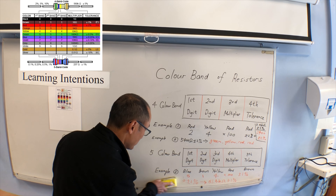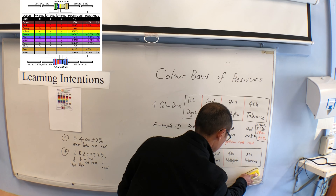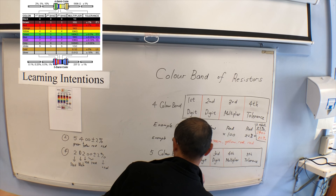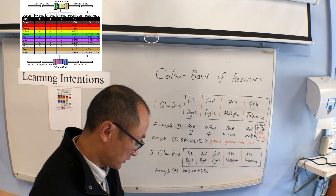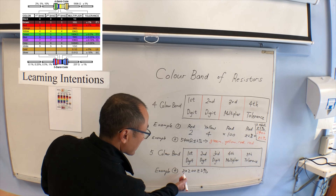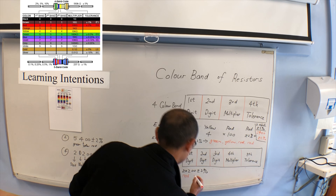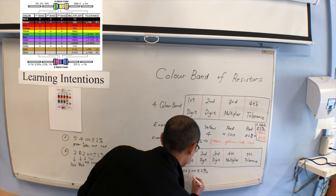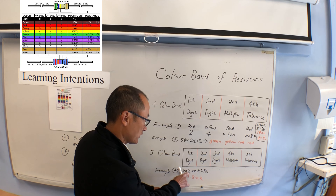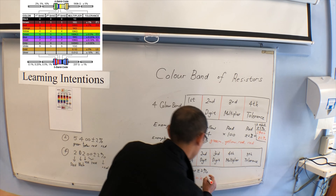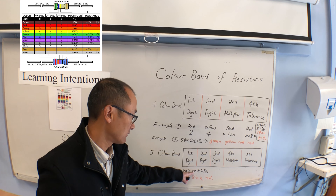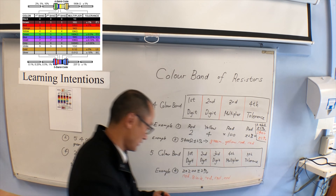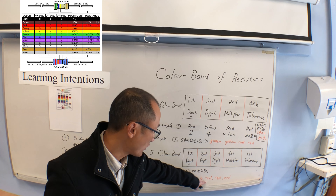Let's do the last example. If the number is twenty thousand two hundred — let's convert to colors. The color for two is red. The color for zero is black. The color for two again is red. The double zero means the multiplier is red, and two percent tolerance is also red. So it is red, black, red, red, red.